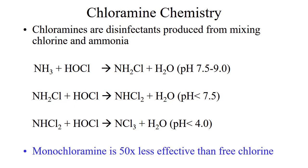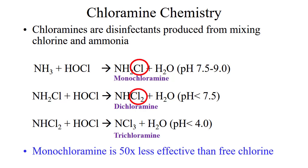Monochloramine is created by mixing ammonia into water with a free chlorine residual. Depending on the pH of the water, it is also possible to create dichloramine and trichloramine. One way of remembering the different chloramine species is: monochloramine has 1 chlorine, dichloramine has 2 chlorines, and trichloramine has 3 chlorines. These species are referred to as combined chlorine. Total chlorine is the sum of the combined chlorine residual and the free chlorine residual. The pH range between 7.5 and 9.0 is ideal for forming monochloramine. Dichloramine is not detectable above a pH of 7.5, and trichloramine is not detectable above a pH of 4.